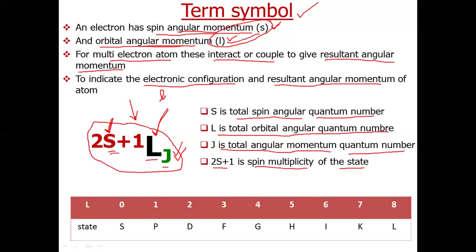Just as for small l we have atomic symbols for orbitals, similarly for values of capital L we have different symbols. If L is 0, it is denoted by capital S and is called an energy state. If L is 1, the energy state is capital P. If L is 2, the energy state is capital D, and so on. The value of capital L corresponds to a specific energy state. In the term symbol we use these symbols instead of the numerical value of L.